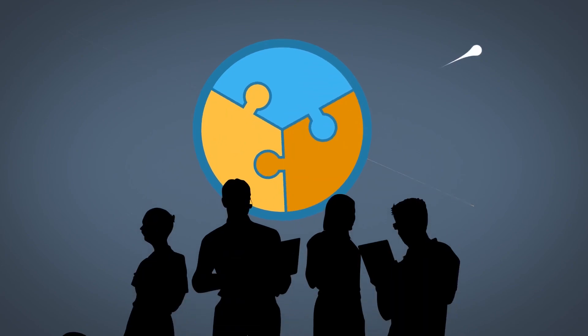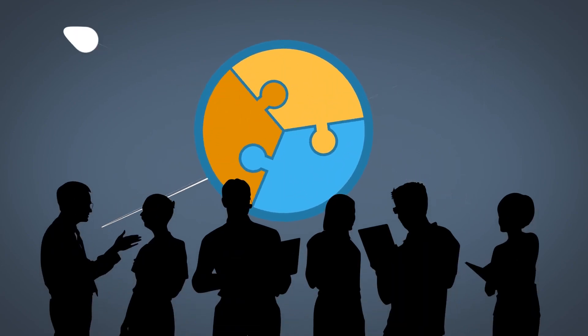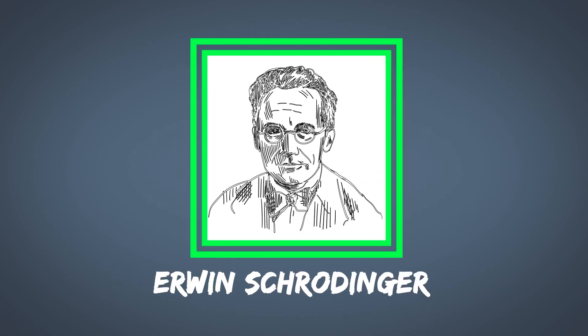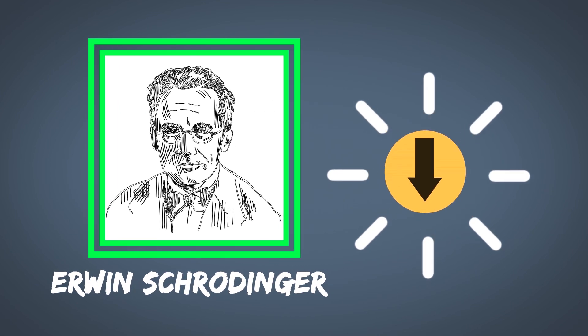But some of the founders of quantum mechanics didn't really like how this was being described. One of those people was Erwin Schrödinger, one of the founders of quantum mechanics. He looked at this example, this language, and developed a thought experiment to show just how lame this language is.